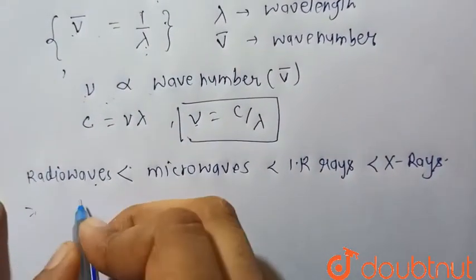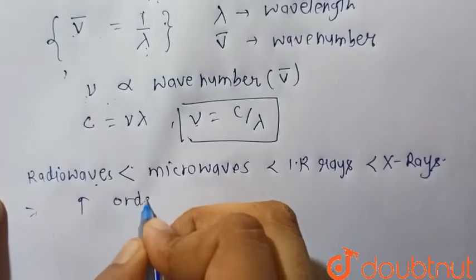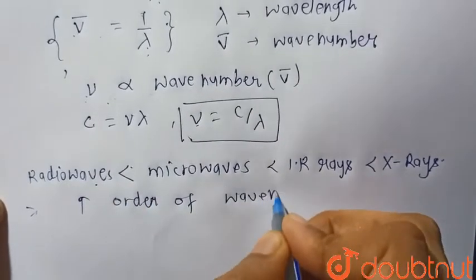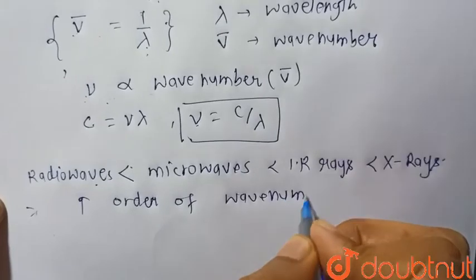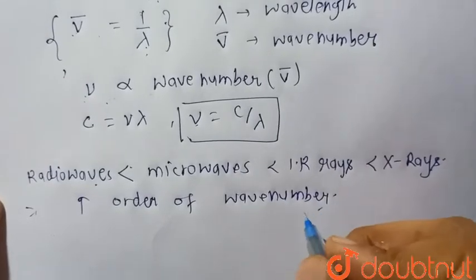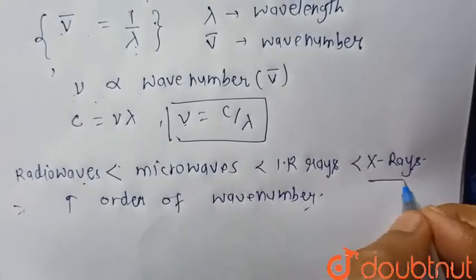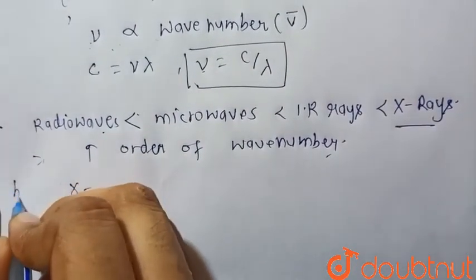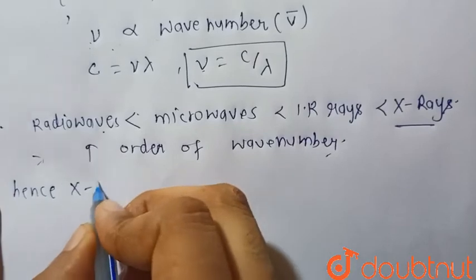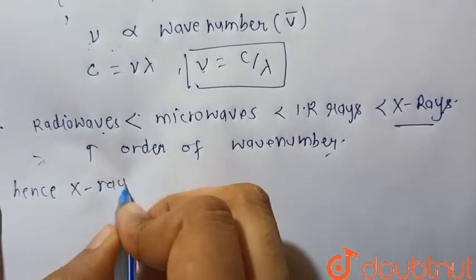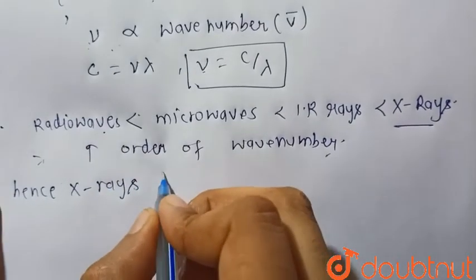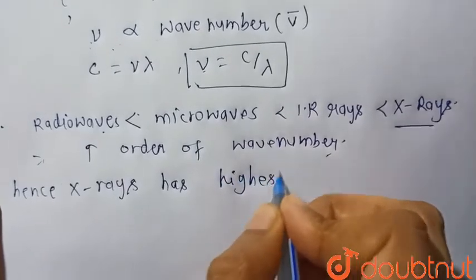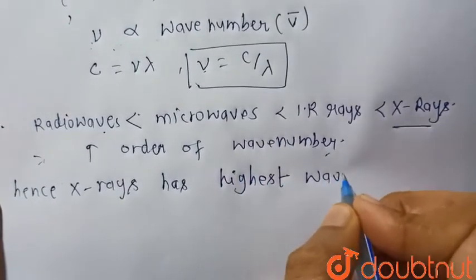Since frequency is directly proportional to wave number, X-rays also have the highest wave number. Hence, X-rays have the highest wave number.